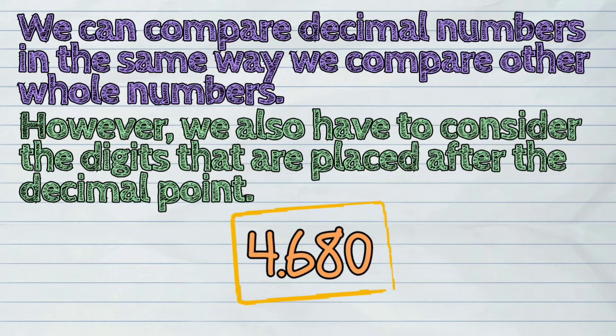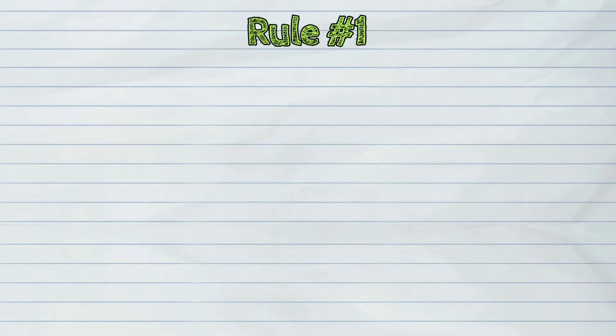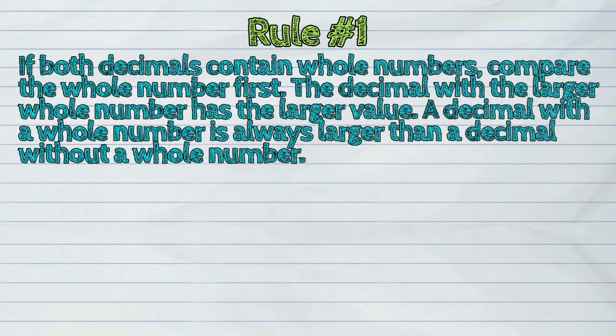Let us study these following rules. First, if both decimals contain whole numbers, compare the whole number first. The decimal with a larger whole number has the larger value. A decimal with a whole number is always larger than a decimal without a whole number. Like this example.